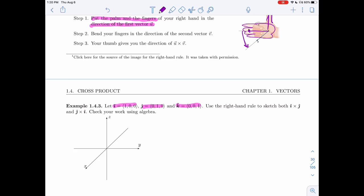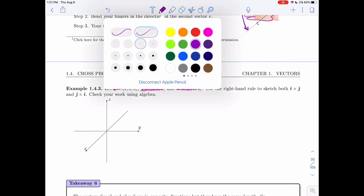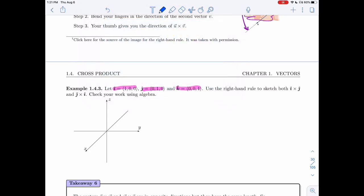So I want to use the right hand rule to sketch both i cross j and j cross i. And then once I've used the right hand rule to figure out where those two vectors should be, how they should point, I want to check that my work is correct using algebra, using our definition of the cross product. So let me draw these vectors. i is (1, 0, 0), so that's in the x direction. Let's bring it here. That's i. And then let me put j, which is in the y direction, right here. Alright, so here are i and j.